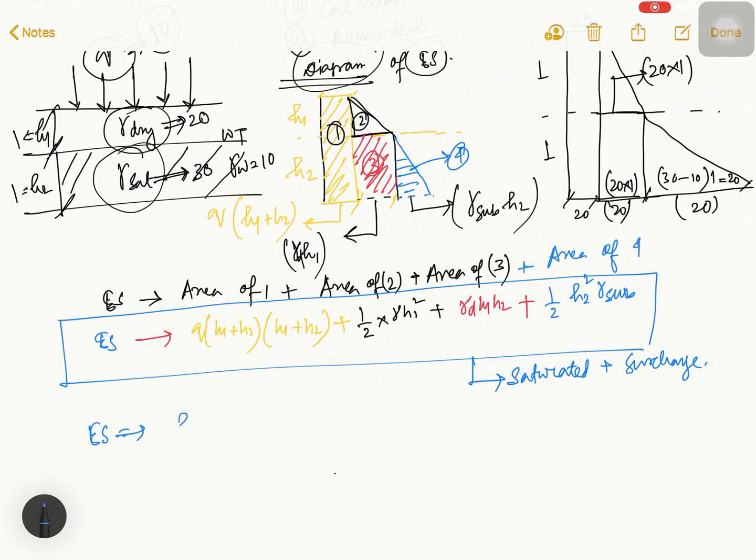Q h1 plus h2 means 20 into 1, this value is 20. Here what will happen? Half into 1 square plus gamma dry value is 20 into 1 into 1, and half 1 square, gamma submerge 30 minus 10 is 20. So 20 plus 10 plus 20 plus 10 equals 60. The answer is 60 Newton per meter. That's it sir.